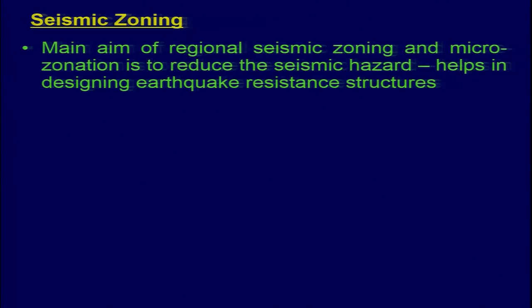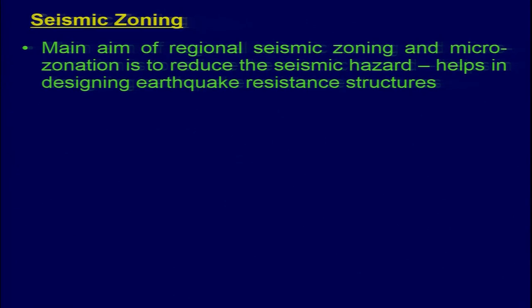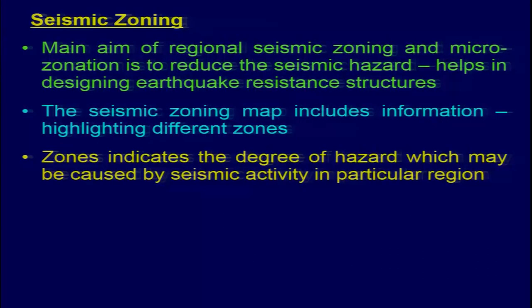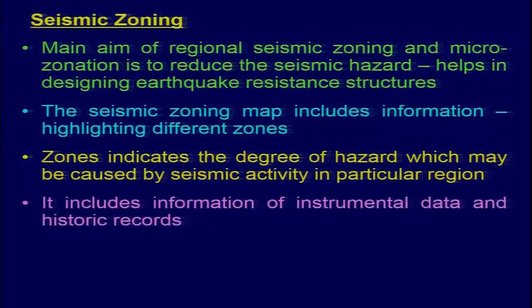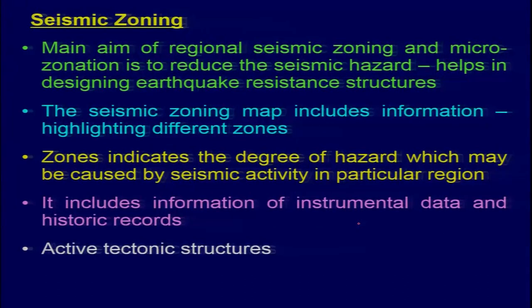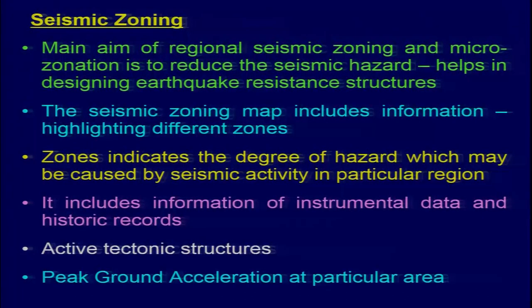The main aim of regional seismic zoning and microzonation is to reduce seismic hazard, which helps in designing earthquake-resistant structures. Seismic zoning maps indicate the degree of hazard caused by seismic activity in a particular region, while microzonation also considers the particular site of interest. It includes information from instrumental data, historical records, active tectonic structures, and peak ground acceleration at a particular point of interest.